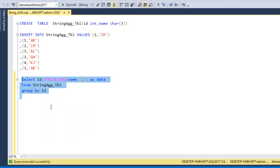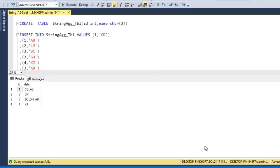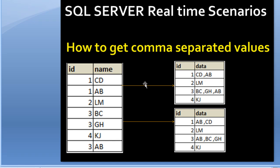Let me execute this query. We are getting the output as expected — matching the first result set we saw in the slide. What it does is pick the first value and check for another value; if found, it adds that value after a comma. So CD comes first, then a comma, then AB is appended. That's the first output.